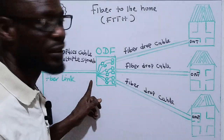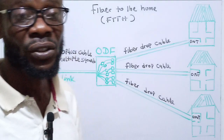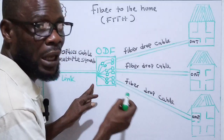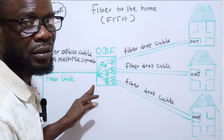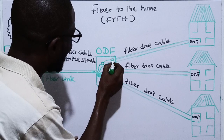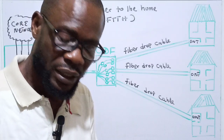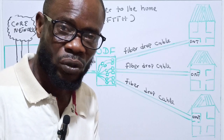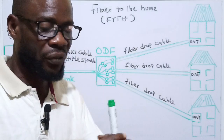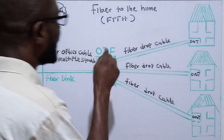The fiber cable can house about 250 strands of fibers. Inside the ODF you have pigtail fibers. The strands coming from the main cable and the pigtails are spliced together using a special machine, joining the fiber coming from the optical distribution frame.